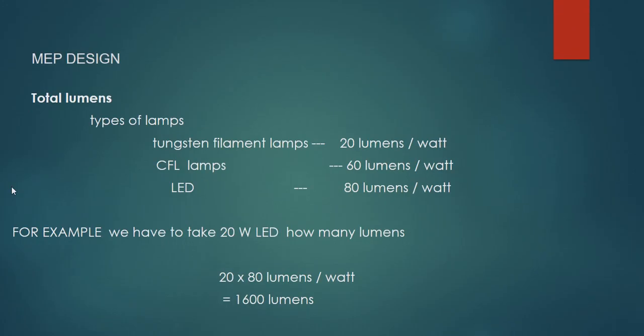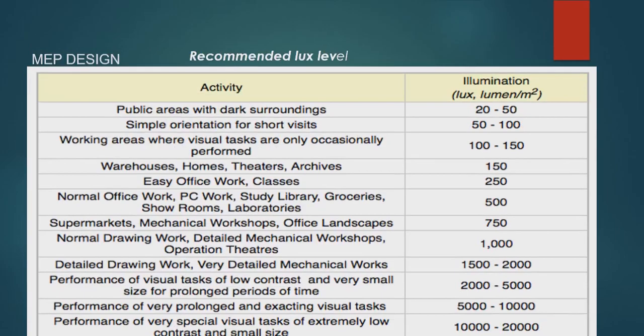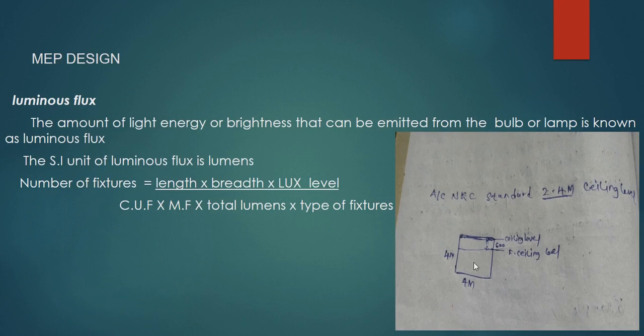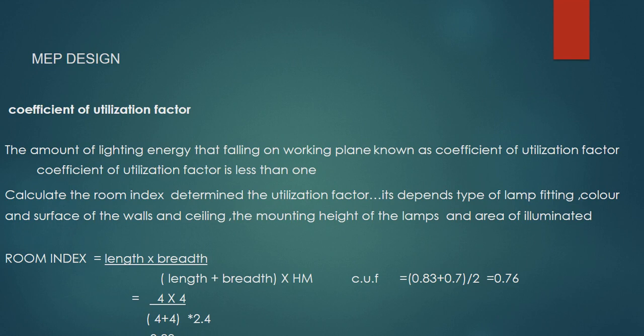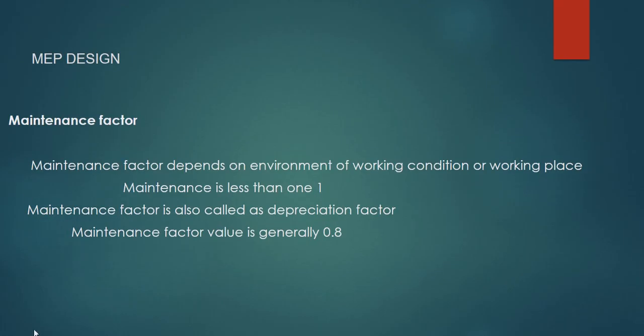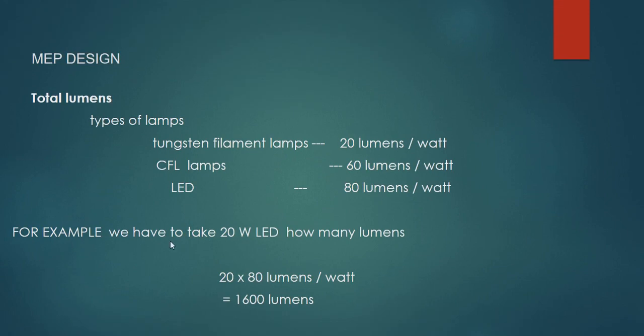Now we will go to the lumens types of lamps. Tungsten filament lamps: 20 lumens per watt. CFL lamps: 60 lumens per watt. LED: we consider 80 lumens per watt. For example, if you take a 20-watt LED, how many lumens are in this? How many LEDs are required?